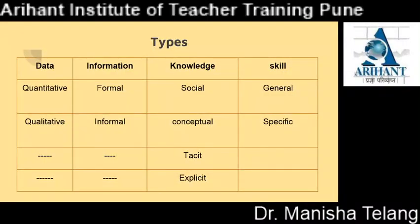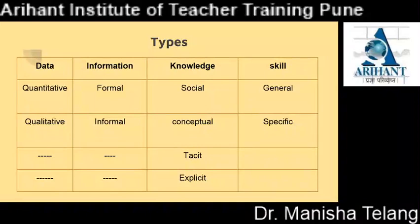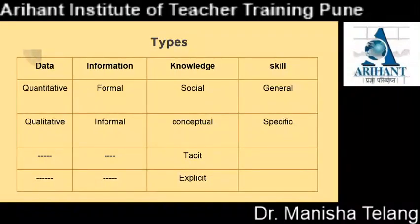Types summary: Data are of two types — qualitative and quantitative. Information: formal information and informal information. Knowledge: social, conceptual, tacit and explicit. Skill: general skill and specific skill.